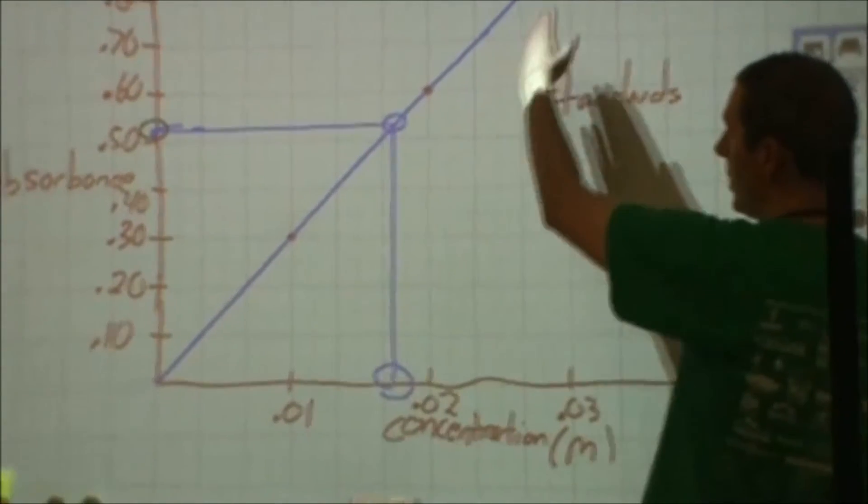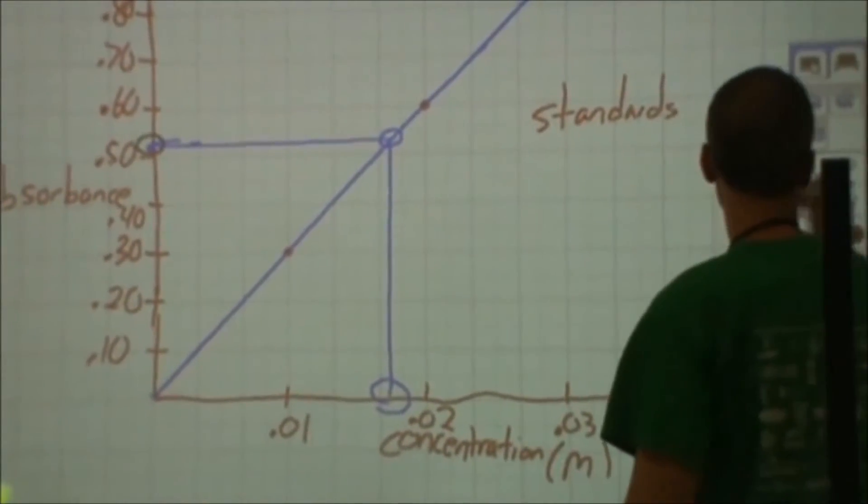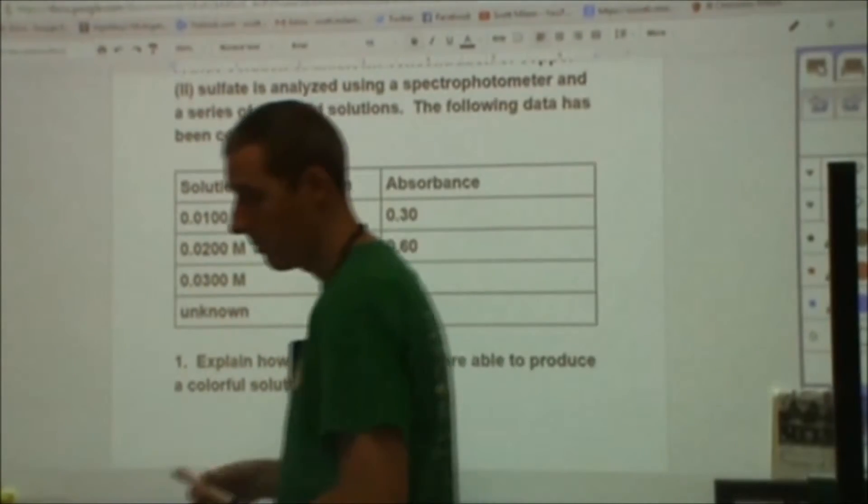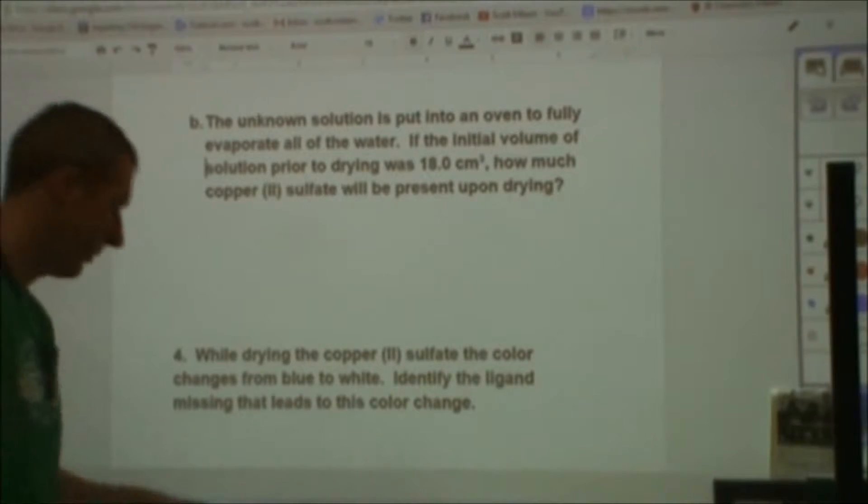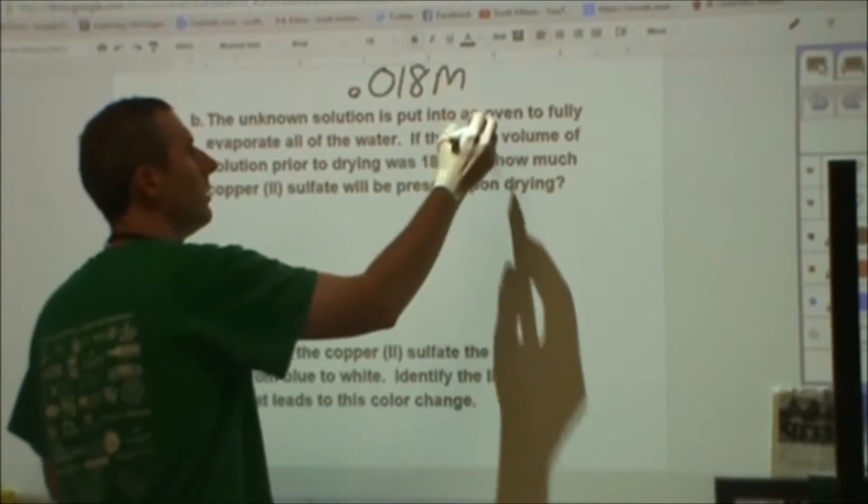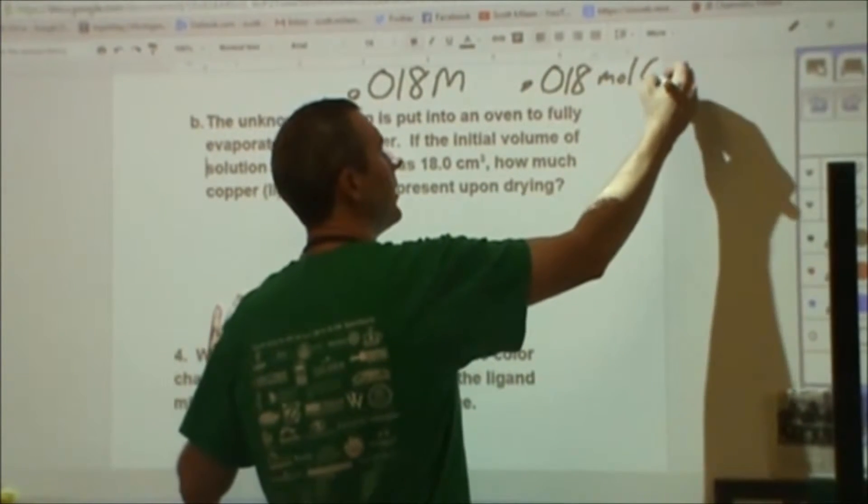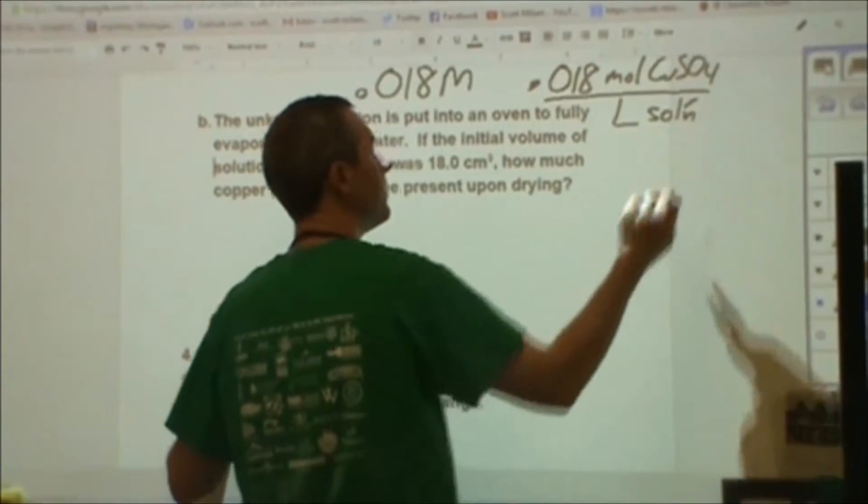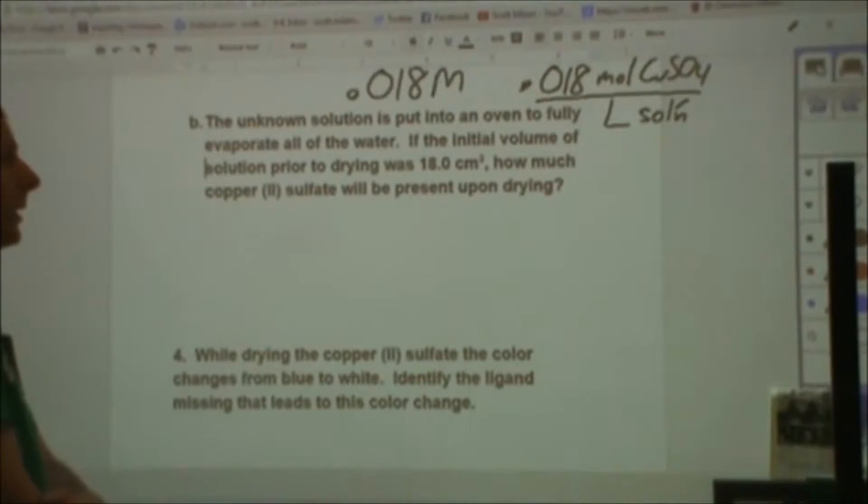It is possible to actually get an equation for this line, and then use that to plug in to get a little more accurate. But given the number of sig figs we're dealing with in this particular question, the way I did this is perfectly reasonable and fine. So I ended up with an answer of 0.018 molar, which would be 0.018 moles of copper sulfate per liter of solution. That would be my answer to 3A from that calibration curve that I constructed.